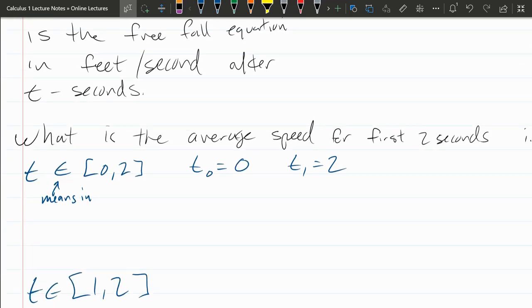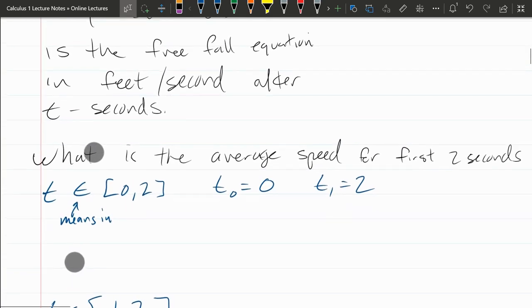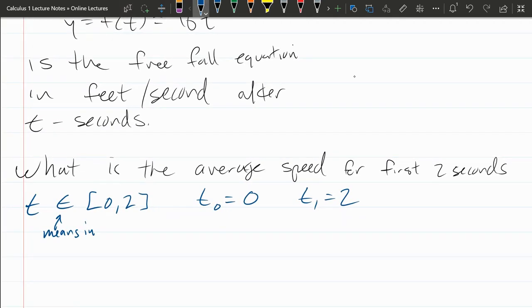We have our formula we're going to apply next. So, average rate of change is f of t1 minus f of t0 divided by t1 minus t0. Plugging these values in.